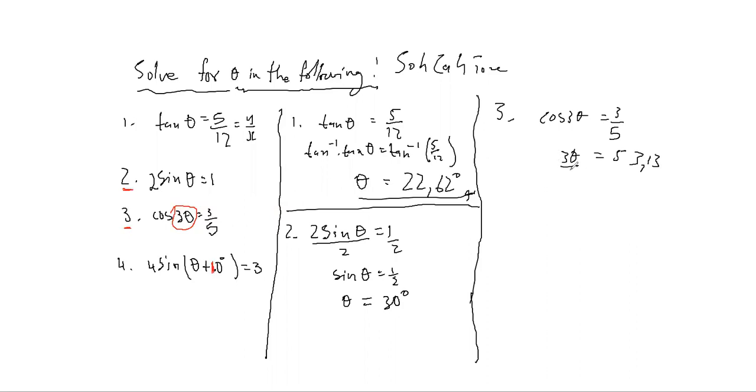Now to get θ, you must divide by three both sides. And so therefore, θ is 53.13 divided by 3. And that should give us something like 17.71 degrees. Because θ is an angle.